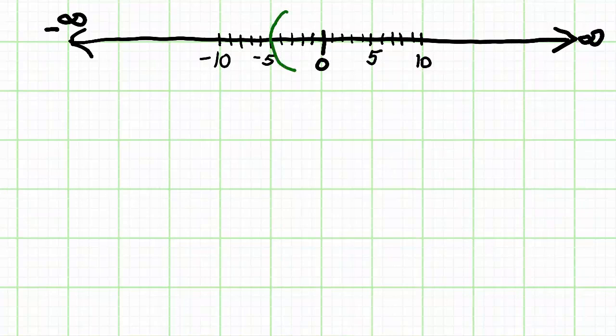Now, the problem we're given has a parenthesis going through negative 5 and an arrow going off to the right. We're asked to write the interval notation that matches that graph.